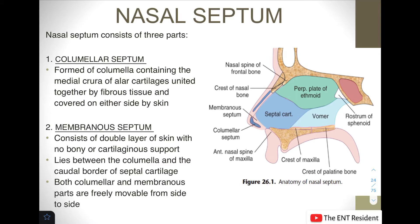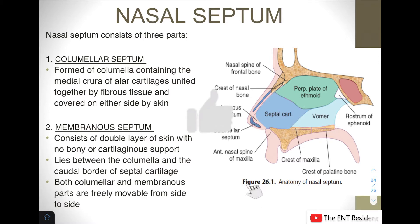Our topic today is about the anatomy of the nasal septum. First of all, what we need to know is the different parts of the nasal septum. It has three parts: the columellar septum, the membranous septum, and the septum proper.